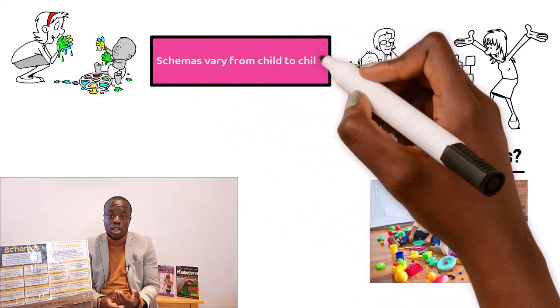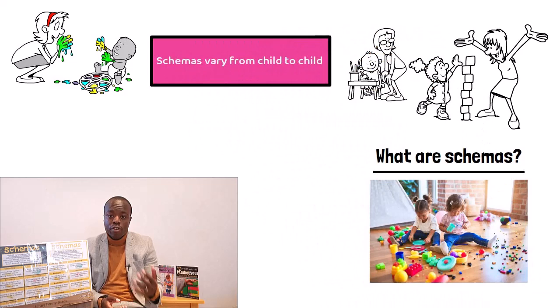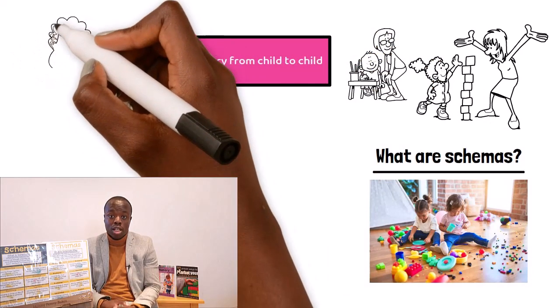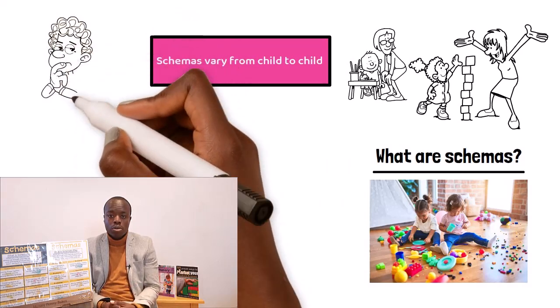Schemas can vary from child to child. Some children will demonstrate a variety of schemas during their play, whereas others will show just a few or maybe none at all. So how can we support our children?